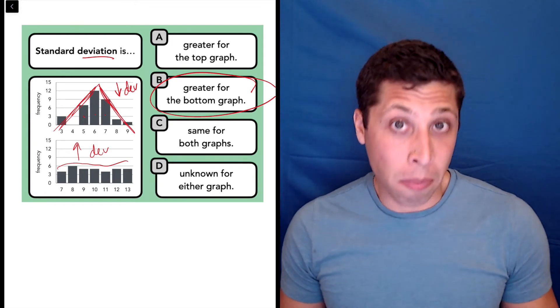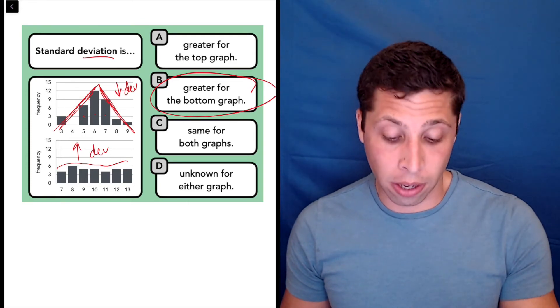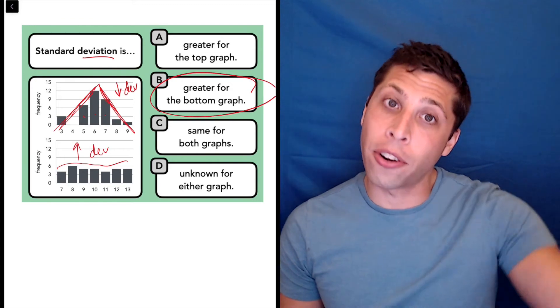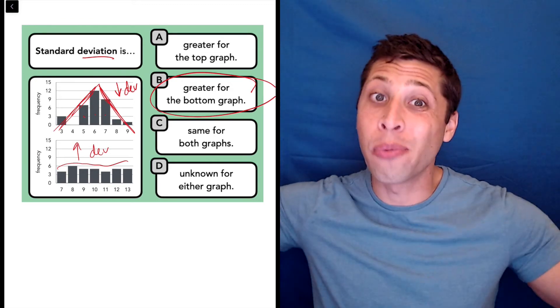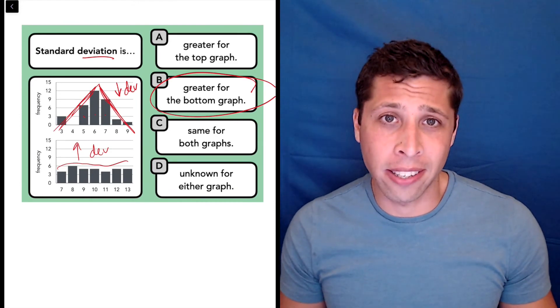Hopefully you can just remember that, but if you have a little trouble, I would say focus on that word deviate, deviation. To deviate, that's a good SAT word. It means to kind of wander, to move away from a path, to move away from a middle. And so it's a very visual thing when you see it in a data set.